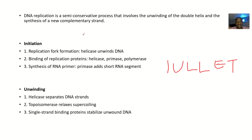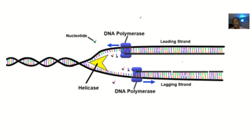DNA replication is a semi-conservative process. Semi-conservative means nothing is destroyed. It involves unwinding of the double helix and the synthesis of a new complementary strand. So as you're unwinding this one, there's an enzyme here called helicase — it's like cutting this off while they are forming new ones. This is the lagging strand and this is the leading strand that we are talking about.